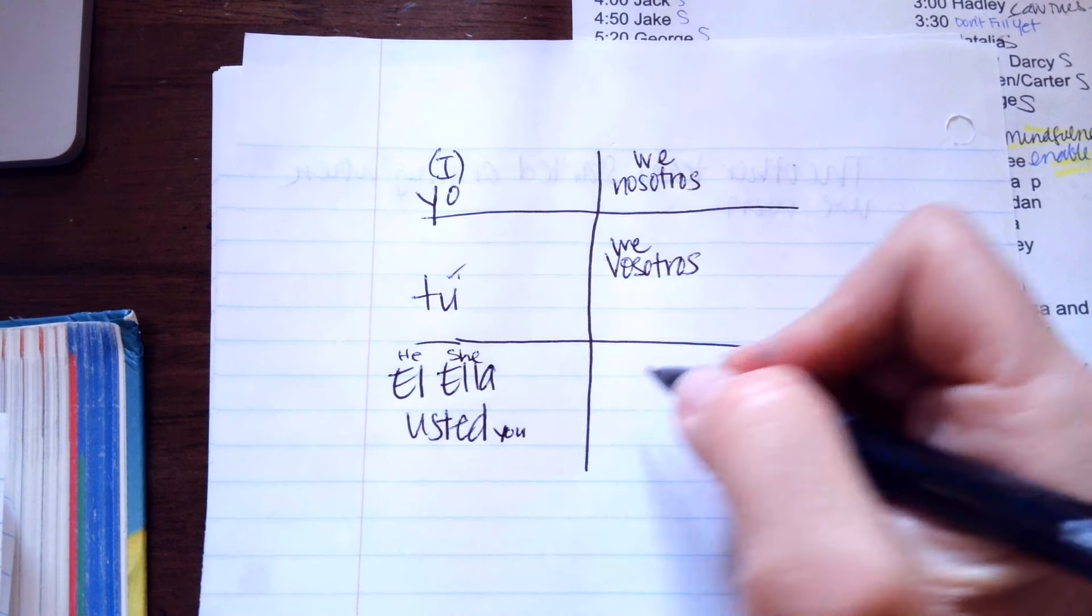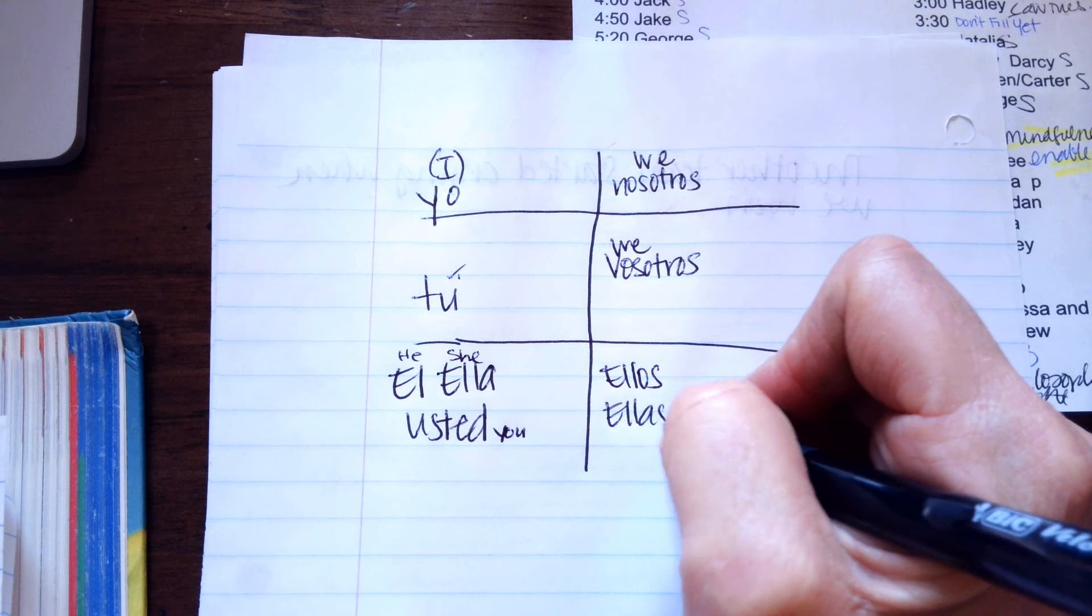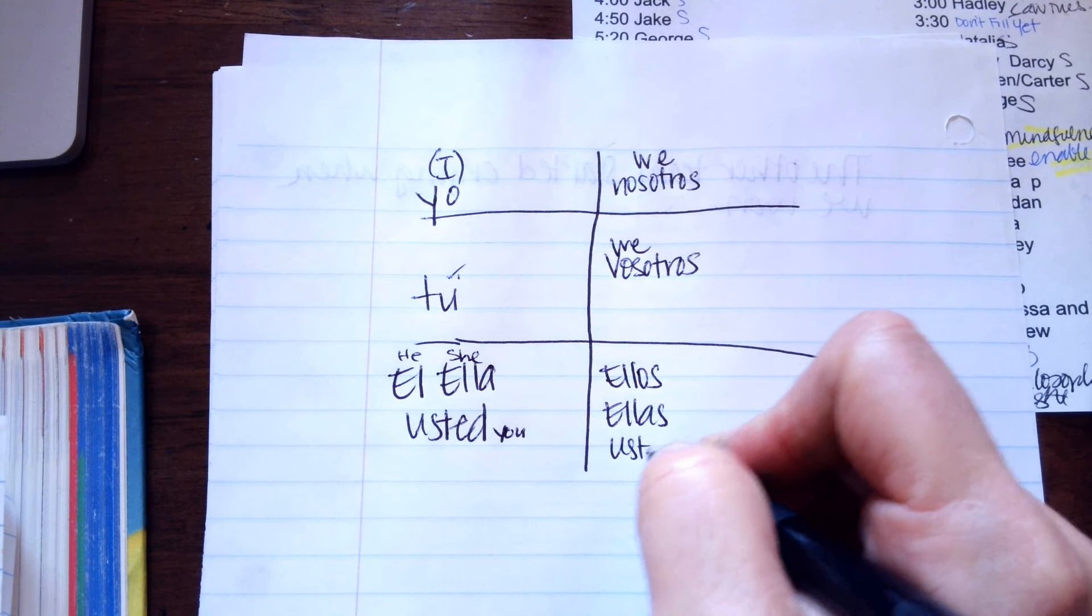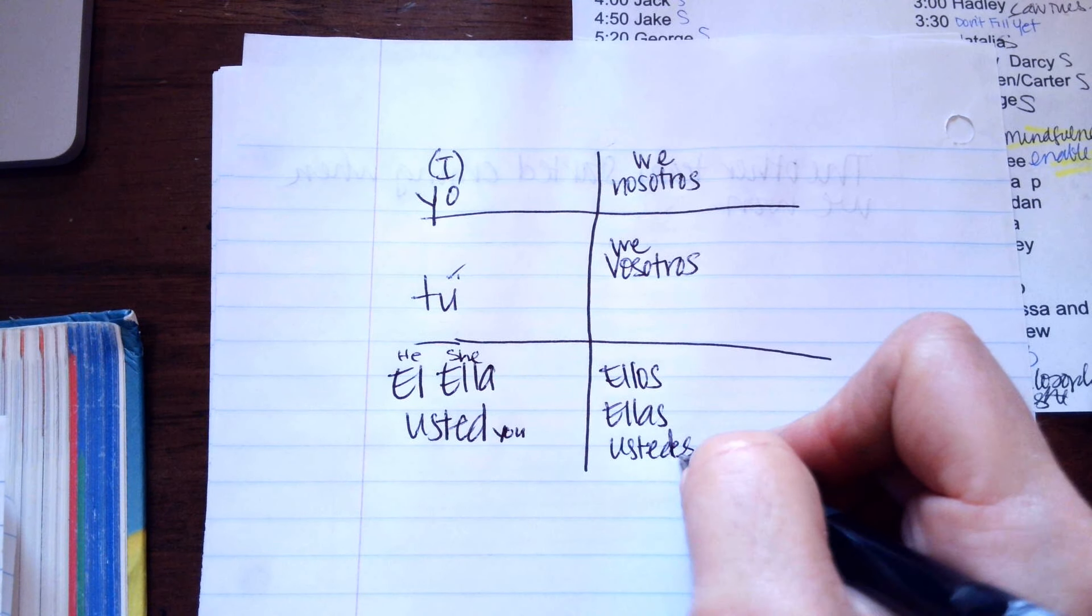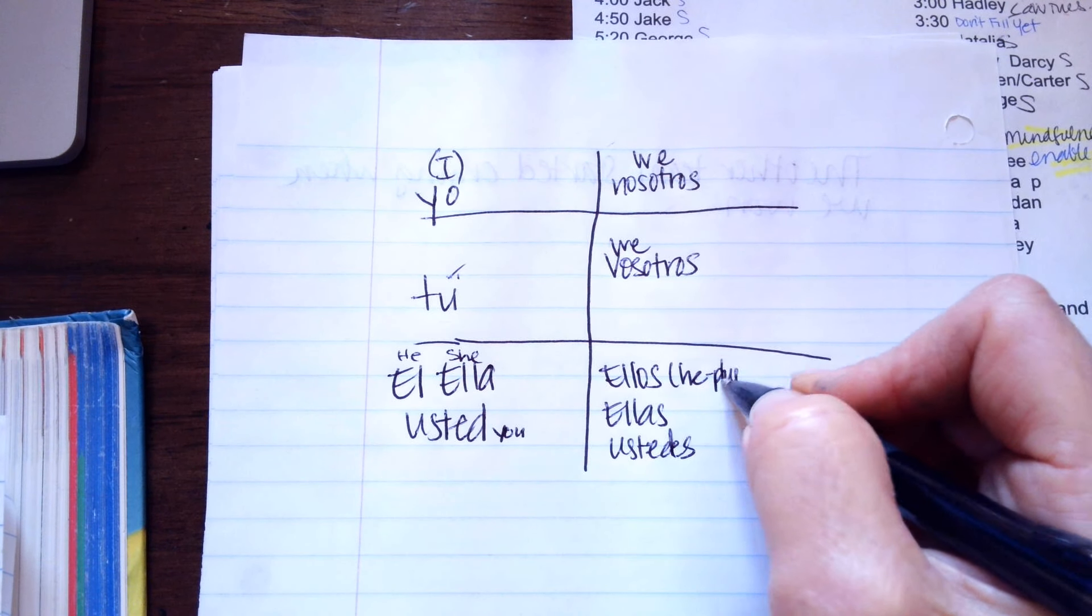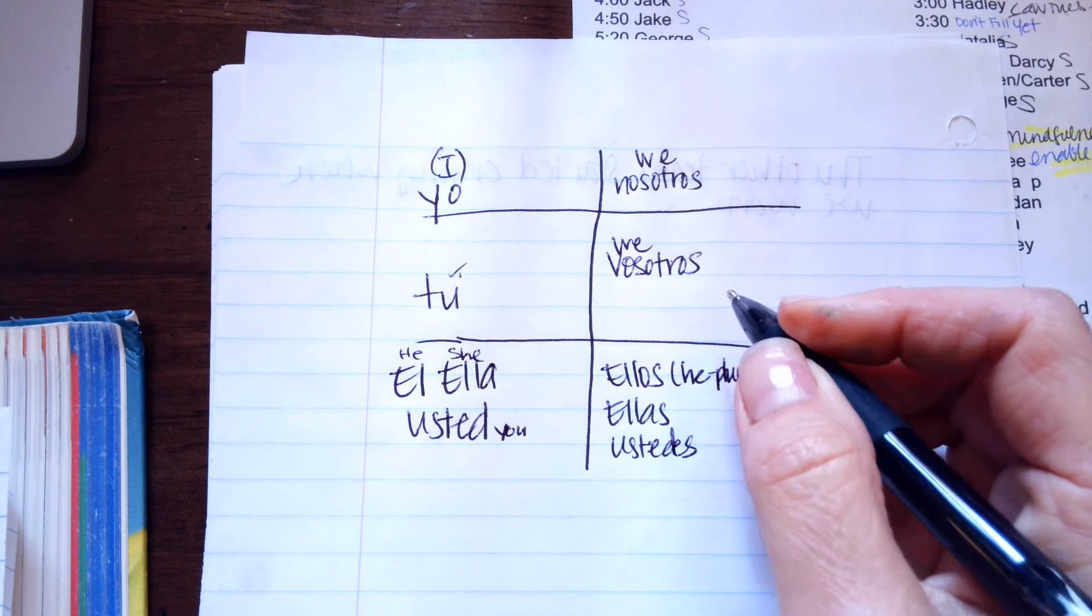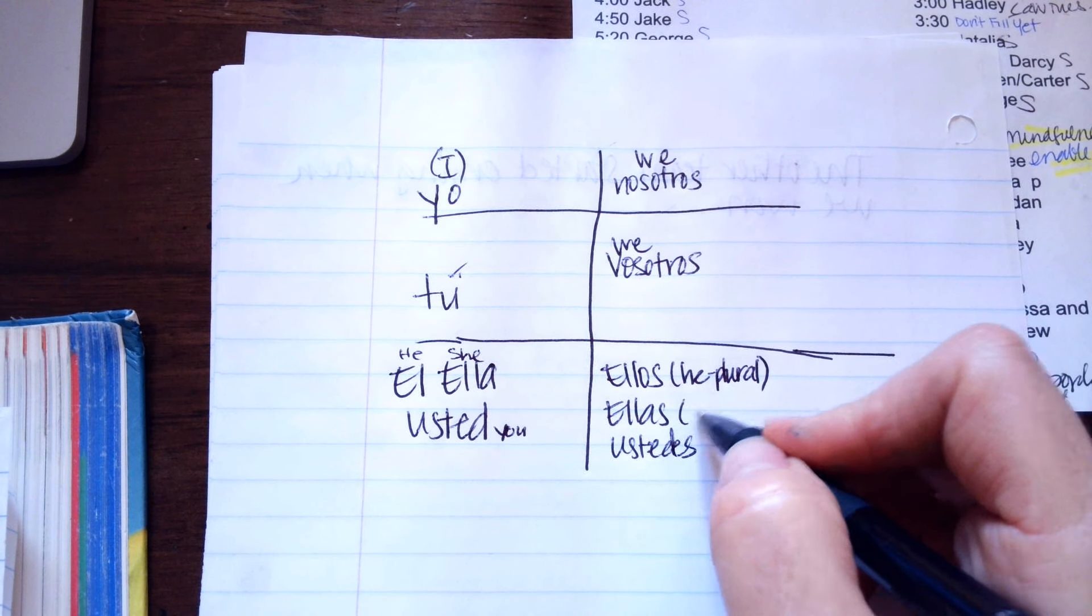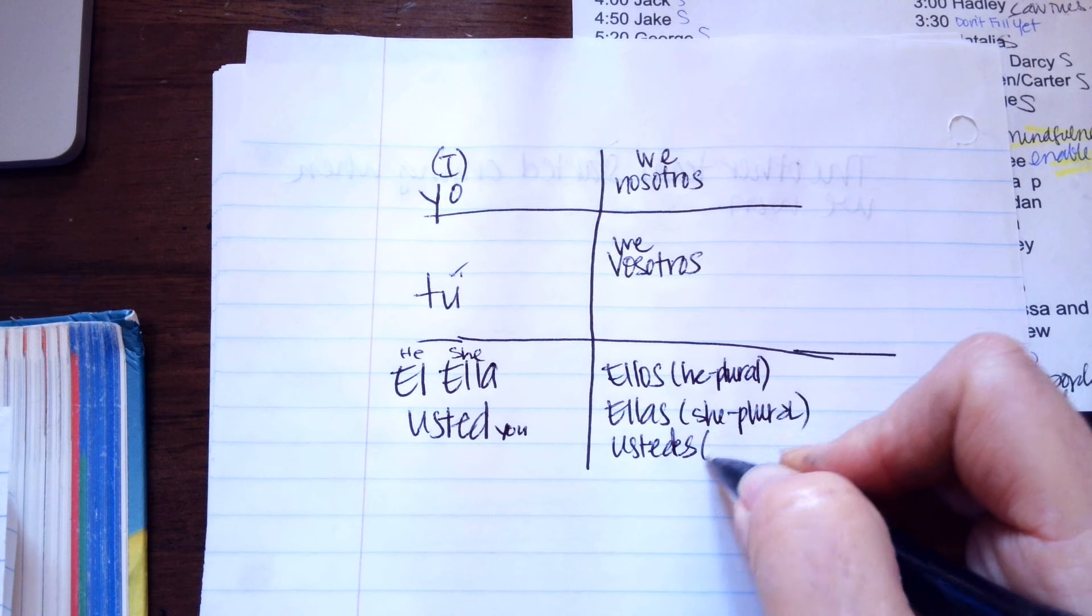We have to learn it. And then this one is ellos, ellas, or ustedes. This means he, but it's plural. So more than one he. Ellas, which is she, and it's plural. And then you, but plural.